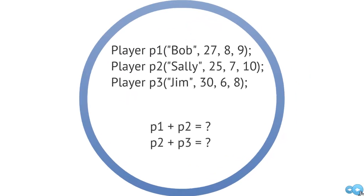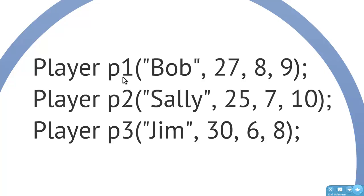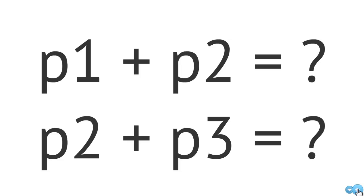Here we have a couple of player objects being created. Assume that in order to construct a player object, we have to specify a name, an age, a strength, and an intelligence. If we were to do p1 plus p2, we really don't know what that means — we would have to define what the plus symbol means whenever we have two player objects. It may involve some mathematical computation based on their age, strength, and intelligence. That would involve overloading the plus operator for the type player.